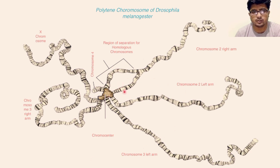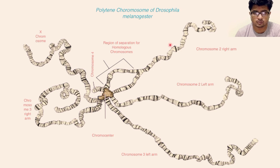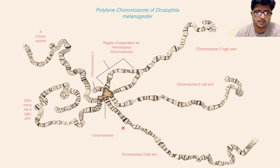You can see they are all joined in the middle. All the centromeres of these chromosomes become adherent to a particular area which is named the chromocenter. These chromocenter joints are the joining area for all the chromosomes.